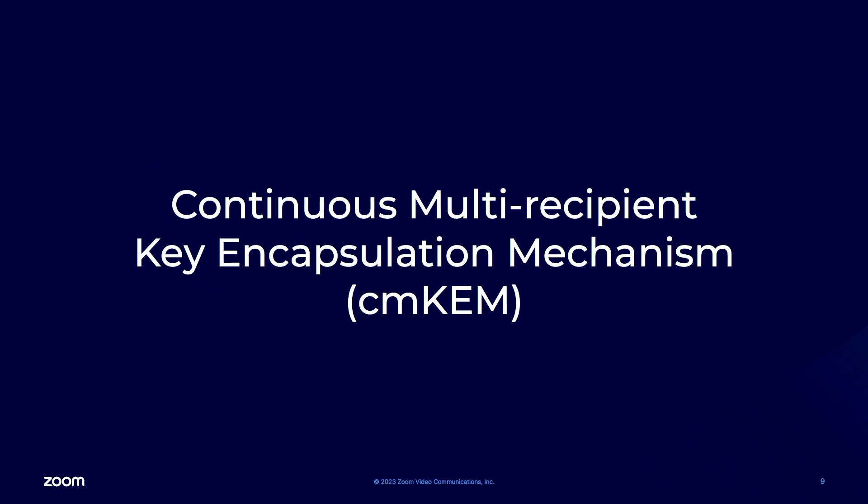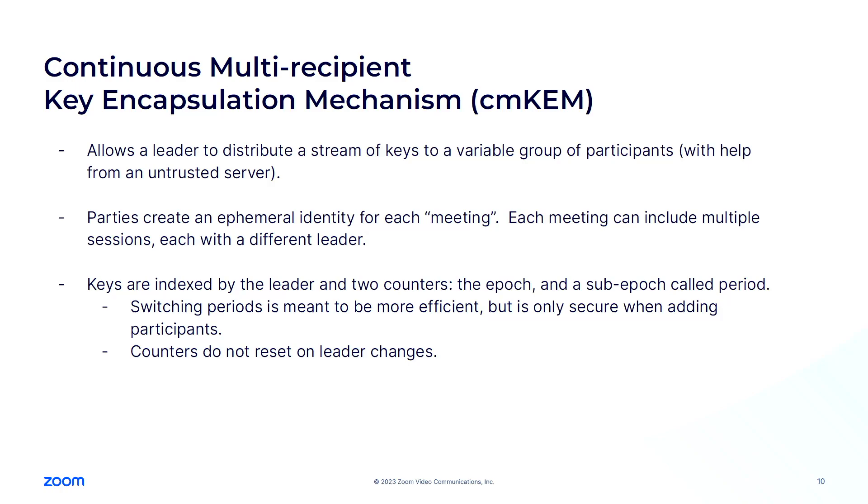All right. So the first primitive is this multi-recipient key encapsulation mechanism, or CMCAM. As I said, it allows a leader to distribute a stream of keys to this mutable set of participants. One peculiarity of this primitive is that the parties have long-term identities, so we assume that there is some sort of PKI here. But for each meeting, they also create an ephemeral identity. And each meeting with this ephemeral identity can be used across multiple sessions, where each session is a stream of keys that comes from a different leader.